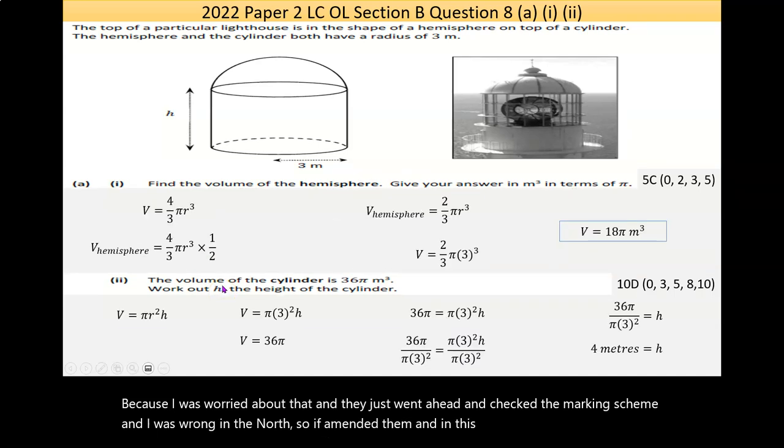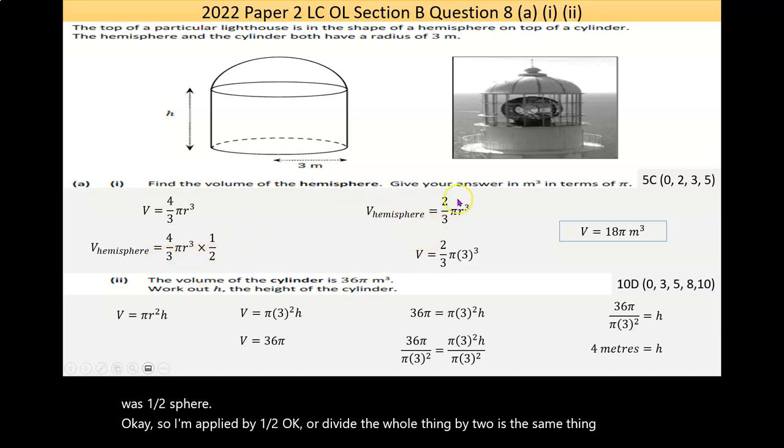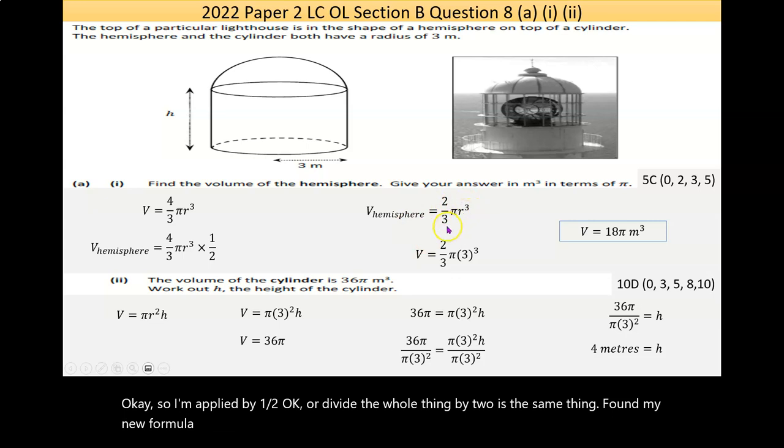And in a sense, just to reflect on what we just did, we saw that it said volume of a sphere, so I found that formula. Then I realized that it was a half sphere, so I multiplied by a half, or divided the whole thing by two, it's the same thing. Found my new formula, and then input the information that was given, the radius of 3, used the calculator, and got my answer of 18 pi meters cubed.